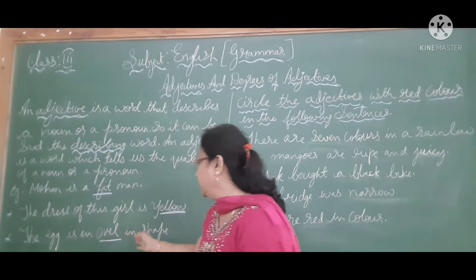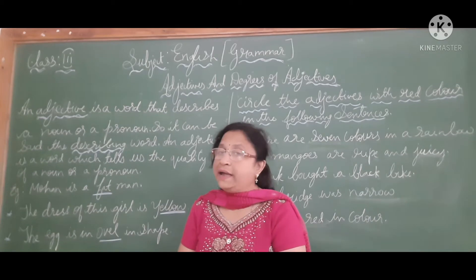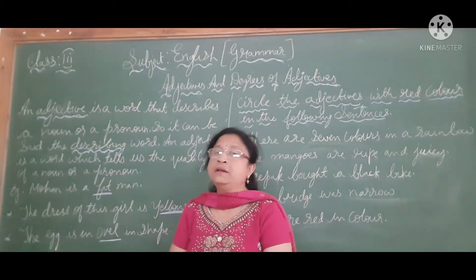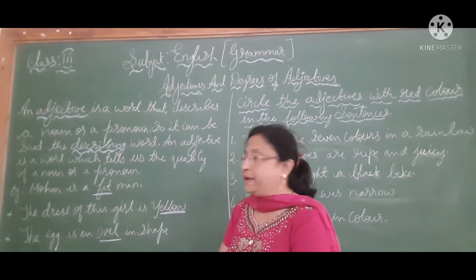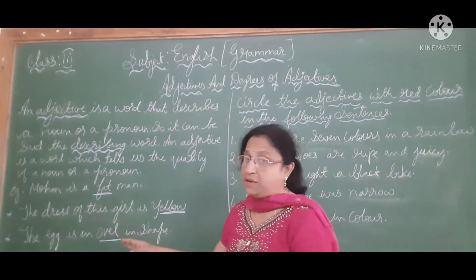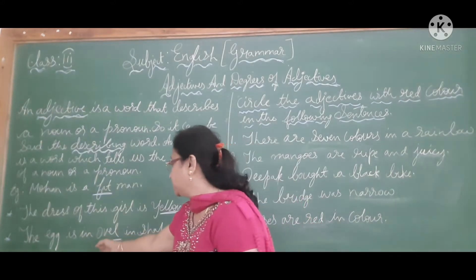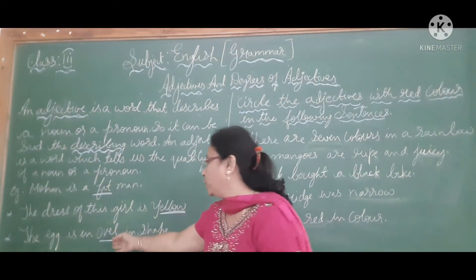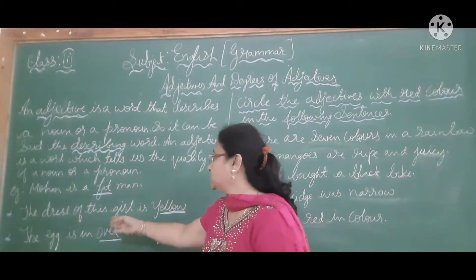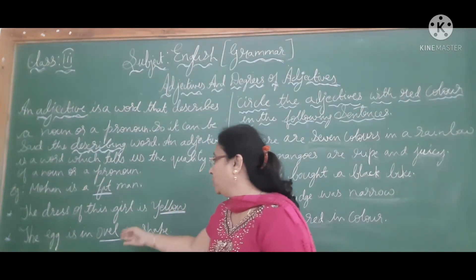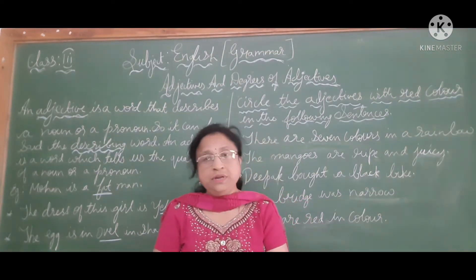The egg is oval in shape. How does the egg look? Is it round or oval in shape? The egg is oval in shape. It is describing the shape of an egg. Oval is a describing word. So the words like fat, yellow, and oval describe the noun or pronoun — these are adjectives.